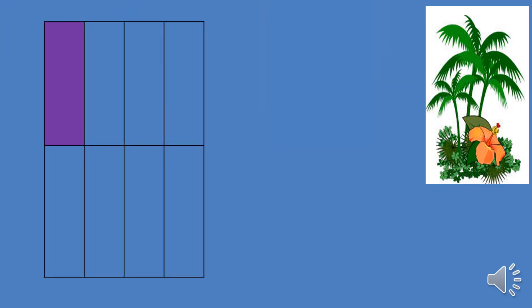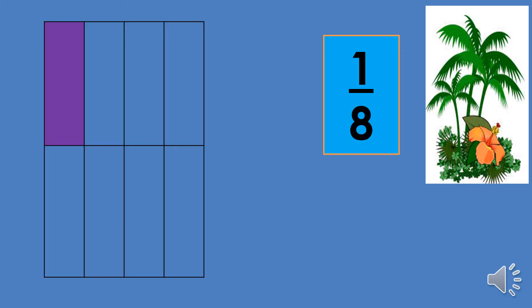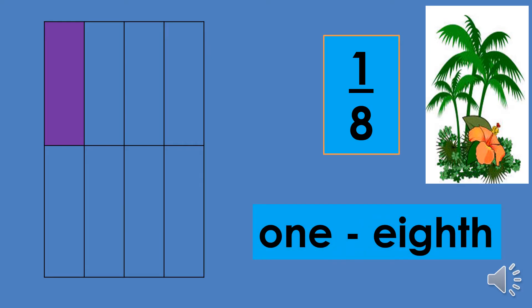There is one shaded part in this figure, so one should be written as the numerator. And it is divided into eight equal parts, so eight is the denominator. The fraction symbol for the shaded part is one-eighth. Here is the fraction word: one-eighth.